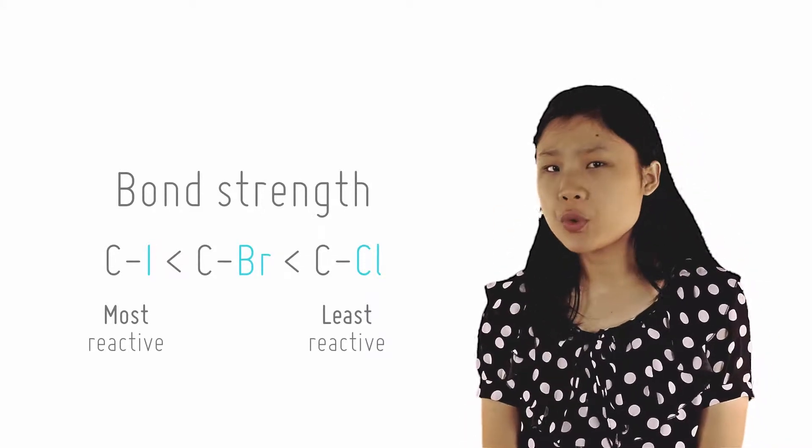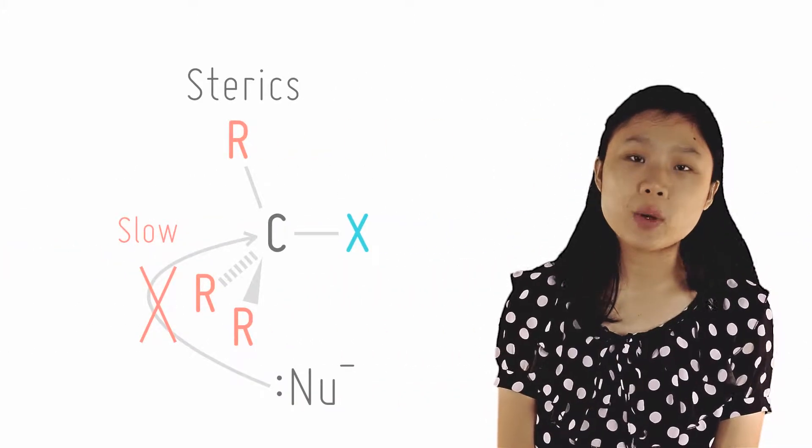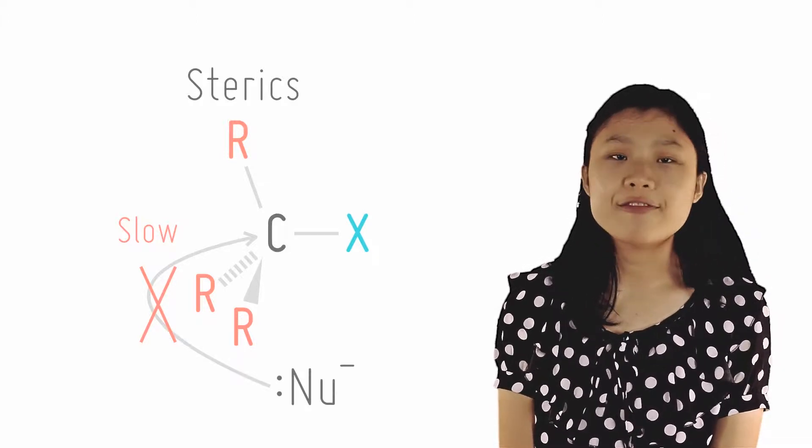Secondly, sterics plays a huge role in this reaction. Since the nucleophile has to be able to approach the backside of the haloalkane, the less bulky groups like alkyl groups around, the faster the reaction.